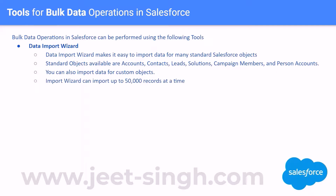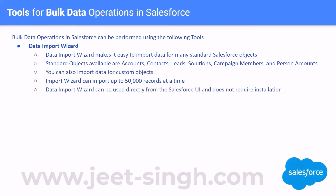The Data Import Wizard can import up to 50,000 records at a time. When you're trying to import records using the Data Import Wizard, you can import up to 50,000 records in a single transaction. The Data Import Wizard can be used directly from the Salesforce UI and does not require any installation — it's a web-based application.